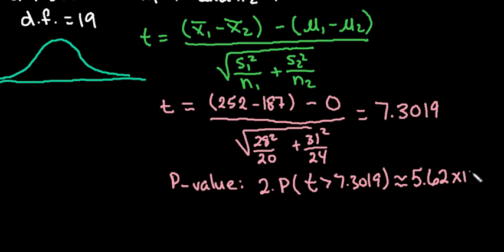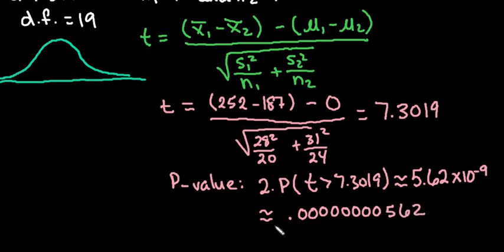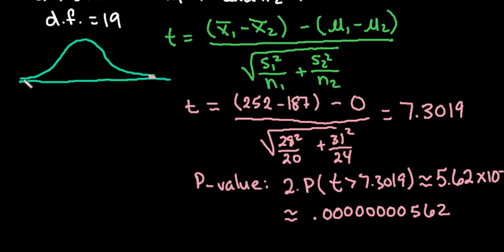The e-9 is very important to understand — that's scientific notation in your calculator, meaning times 10 to the negative 9. So if I were to write this out, I would have 8 zeros before the 5.62, which is why on the other screen it said the p-value was approximately 0 — because this is a very, very small number, very close to 0. So when I shade this, I'm technically shading a p-value up in the tail, but you can just barely see it, because 7 would be way out here with barely any area shown.